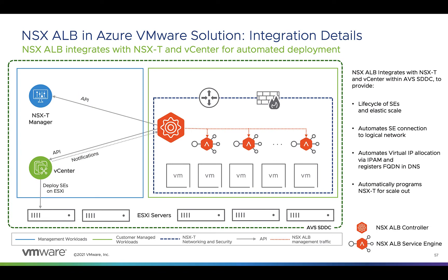Each AVS private cloud has its own instance of vCenter and NSX-T. From the NSX ALB management console, you create a new NSX-T cloud connector with credentials for the AVS NSX Manager and vCenter. The controller then discovers NSX and vCenter configurations such as logical segments, transport zones, and clusters. From there, the controller can automate the provisioning of service engines within that environment, extending local and global traffic management, app security and WAF, and analytics features to AVS workloads.